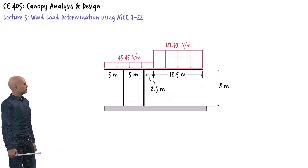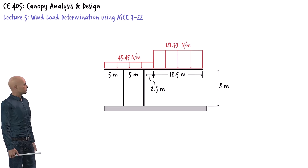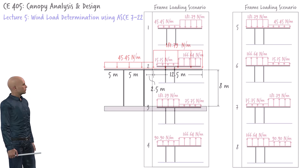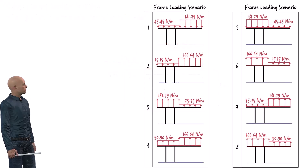Here is a two-dimensional view of the frame showing the distributed loads and the relevant distances. We can determine the distributed loads for the other roof pressure scenarios in the same way. Here are the 8 frame loading scenarios for the open portion of the bus terminal.